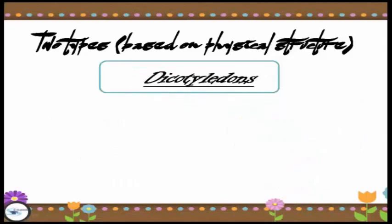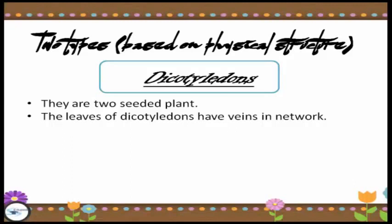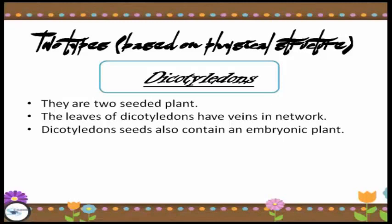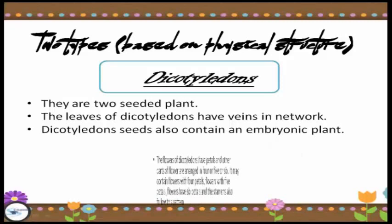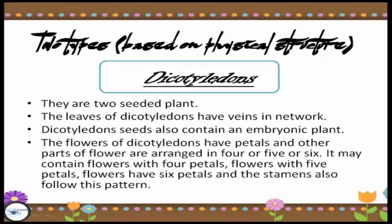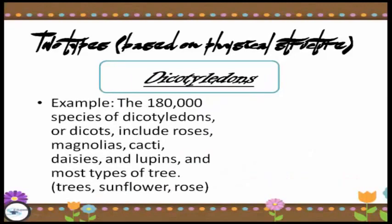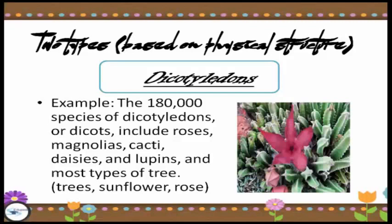The second type is dicotyledons. They are two-seeded plants and their leaves have veins in a network. Seeds of this kind also contain an embryonic plant. The flowers of dicotyledons have petals arranged in fours, fives or sixes — they may contain flowers with four, five or even six petals, and the stamens also follow this pattern. The seed of dicotyledons is protected by a seed coat. Dicotyledons have around 180,000 species worldwide and include roses, magnolias, cacti, daisies, lupines and most types of trees such as the sunflower and rose.